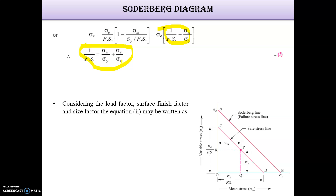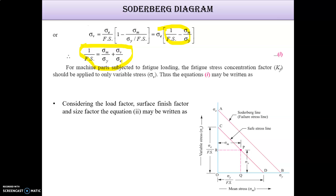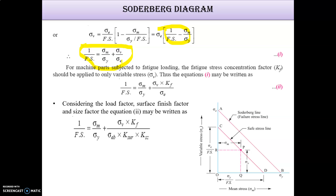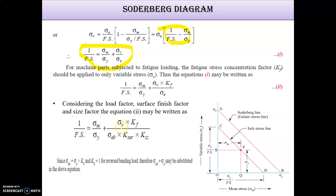For a machine part subjected to fatigue loading, the fatigue stress concentration factor Kf should be applied only to the variable stress Sigma V. Incorporating Kf, the equation becomes: 1 / Fs = Sigma M / Sigma Y + (Sigma V × Kf) / Sigma E. If Sigma EB equals Sigma E × Kb and Kb equals 1, then Sigma EB equals Sigma E. So we have three formulas depending on whether load and surface factors are considered.